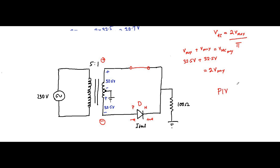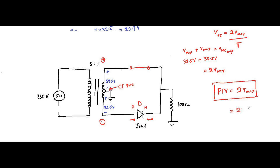So the peak inverse voltage for a center tap type full wave rectifier is always equal to 2V_max, where V_max is the maximum value of the center tap voltage — that is the voltage measured from the center tap point to the other end. For this case, the peak inverse voltage equals 2 times 32.5 volts, which equals 65 volts.